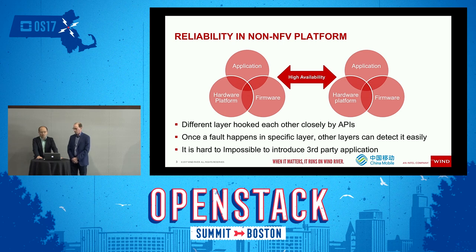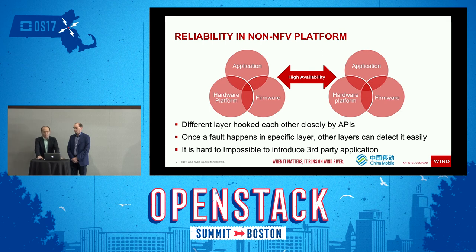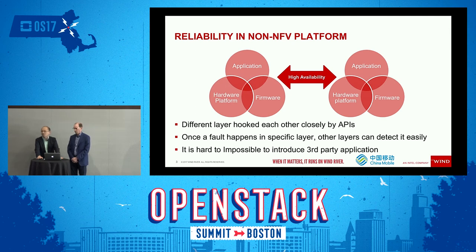In the traditional non-NFV platform, reliability is totally different from the decoupling environment. Different layers hook on each other closely via APIs. As you can see in this picture, once a fault happens in a specific layer, other layers can detect it easily. However, it's impossible to introduce third-party applications — and that's not what we want in the future NFV environment.